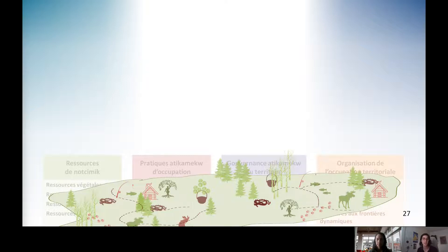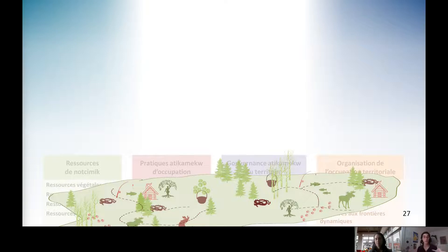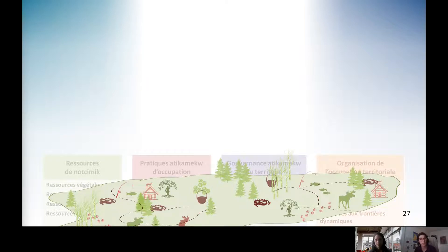C'est un peu dans cette perspective que la vision holistique prend tout son sens : à la fois on tient compte des ressources, ils se sentent responsables par rapport aux ressources et à la santé du territoire, mais pour la poursuite des activités, ils ont mis en place tout un système de gouvernance et d'organisation du territoire pour faire le lien entre les choses et pouvoir s'adapter pour maintenir l'équilibre. Pour eux, c'est très important — la santé du territoire, c'est aussi ce qui va permettre d'assurer la pérennité et la santé de leur culture.